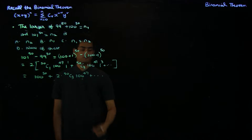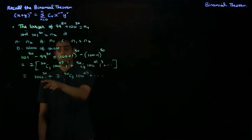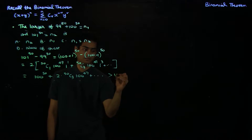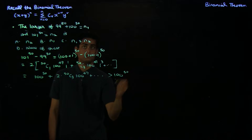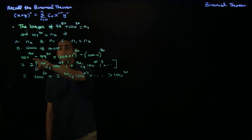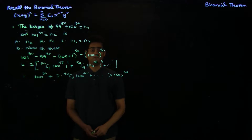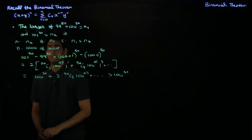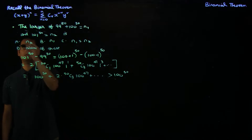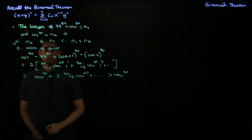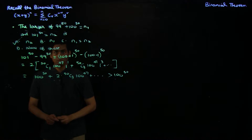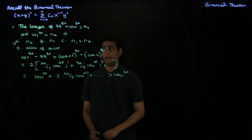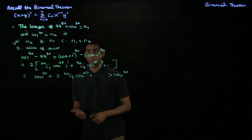Notice that all of these subsequent terms are positive, and since the first term itself is 100 power 50, this whole sum is greater than 100 power 50. So we've shown that 101 power 50 minus 99 power 50 is greater than 100 power 50, and this means that n2 is greater than n1, so the greater number is n2. This example shows you a way in which you can compare binomial numbers.